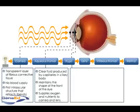In order to transmit a relatively constant level of light to the photosensitive cells of the retina, the size of the pupil regulates the amount of light entering the eye by either constricting or dilating.